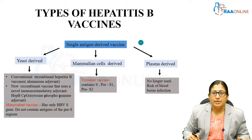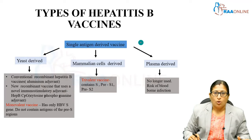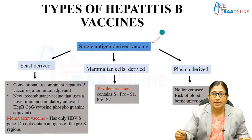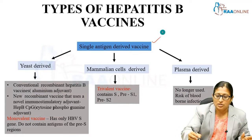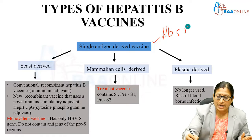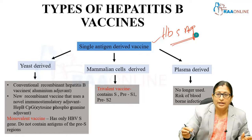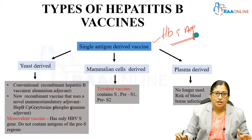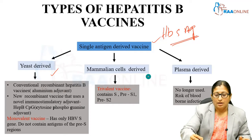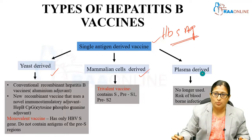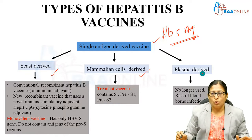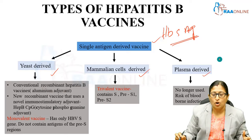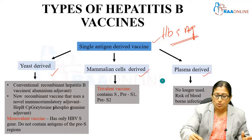What are the types of Hepatitis B vaccines which are available? All these are single antigen derived vaccines — they are all directed against the single antigen which is the surface antigen, HBsAg. Of the single antigen derived vaccines, you have three varieties: yeast-derived vaccine, mammalian cell-derived vaccine, and plasma-derived vaccine. The plasma-derived vaccine is no longer used because of the risk of transmission of bloodborne infections, so this is out now.